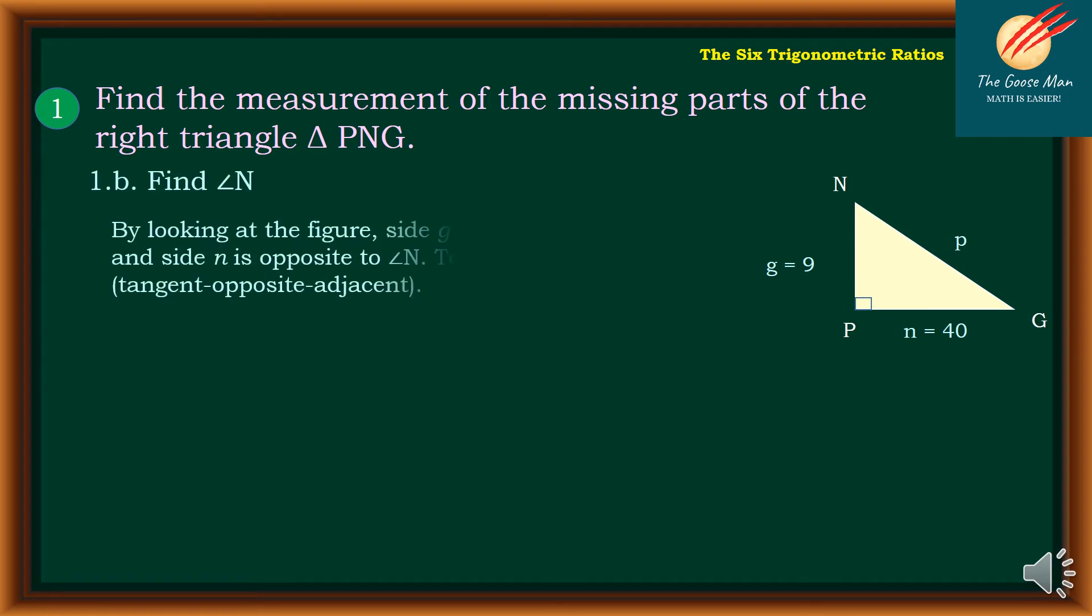Let's move on to the second example. So let's find angle N. So if we will consider the illustration, by looking at the figure, so this is angle N, so side g is adjacent to angle N, and side n is opposite to angle N.